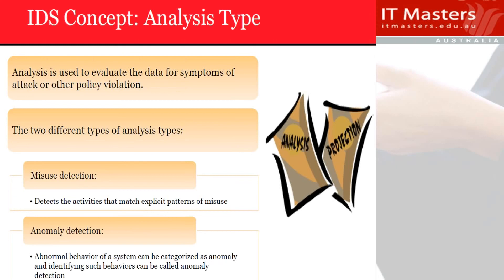Anomaly detection tries to look for abnormal behavior of a system — behavior that can be categorized as 'this is not normal.' How do you know you have a headache? This is not normal — normally when you wake up you don't have any pain. How do you know a baby is hungry? Usually the baby doesn't cry. There is something not usual, and that's what we call anomaly detection.